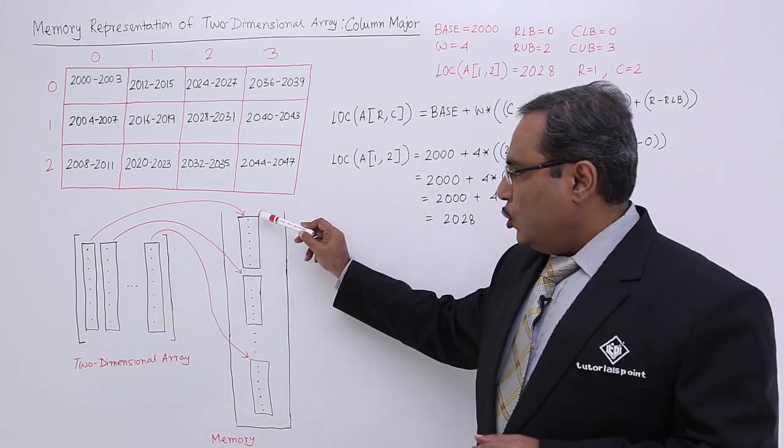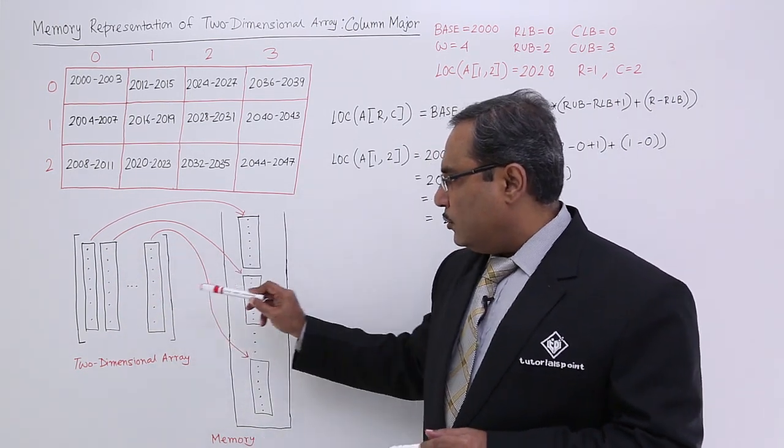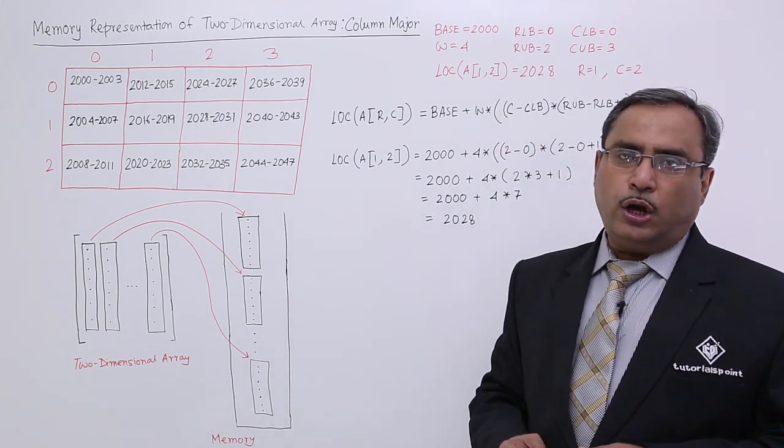At first this column data will be mapped on the linear memory and then column 2 data will be mapped in the linear memory. In this way, the process will get continued.